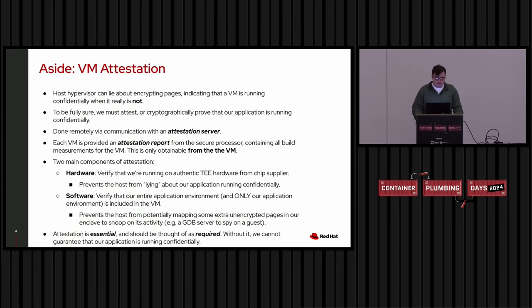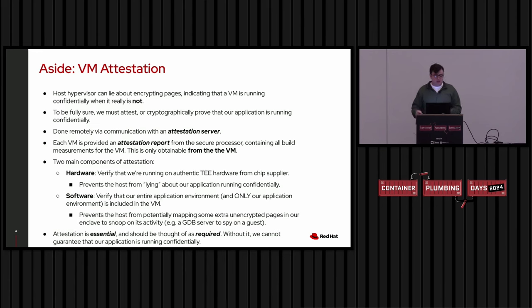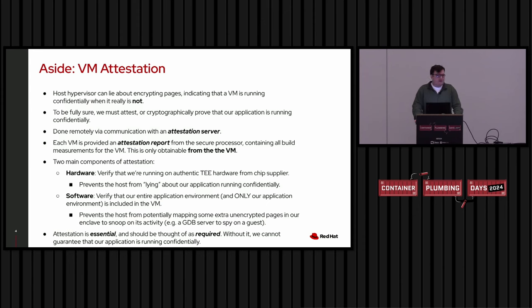One important note relevant to how we build and run containers for confidential computing is a notion called VM attestation. Because we trust the hypervisor to encrypt pages confidentially, we have to trust that it actually did so — it could lie and say you're running confidentially when you're really not. So we have to attest, which means cryptographically proving that we're running confidentially, done in conjunction with a remote server.